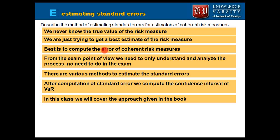Going back to Part 1 concepts — you are trying to create a confidence interval of the risk measure. For example, if the VaR computed is 10 million dollars, you are not 100% sure that is exact. So you create a confidence interval saying the VaR could be anything between, say, 15 to 25 million. That confidence interval is created using the standard error.